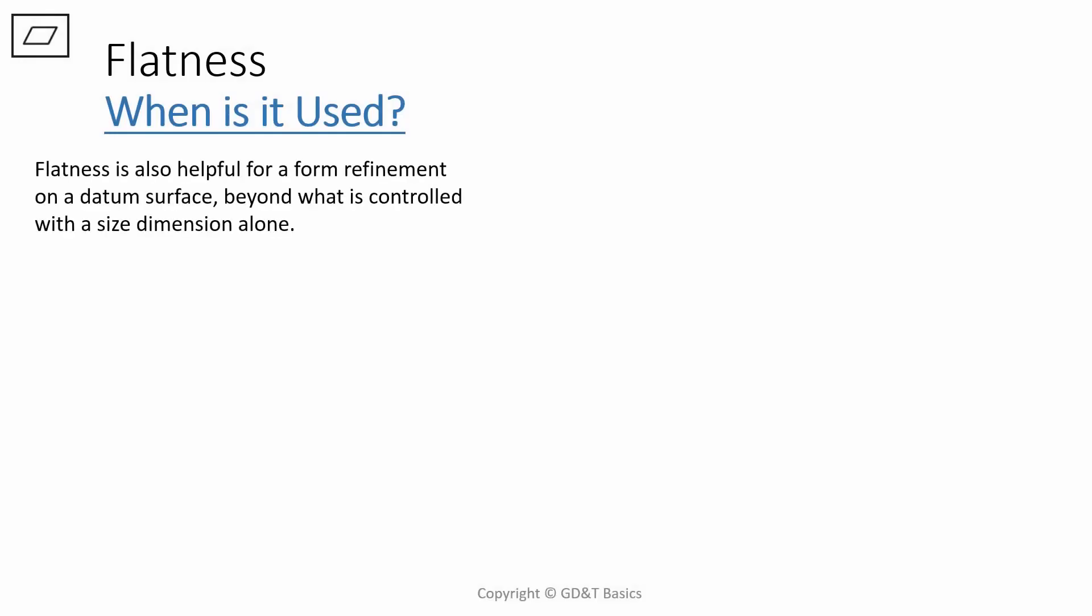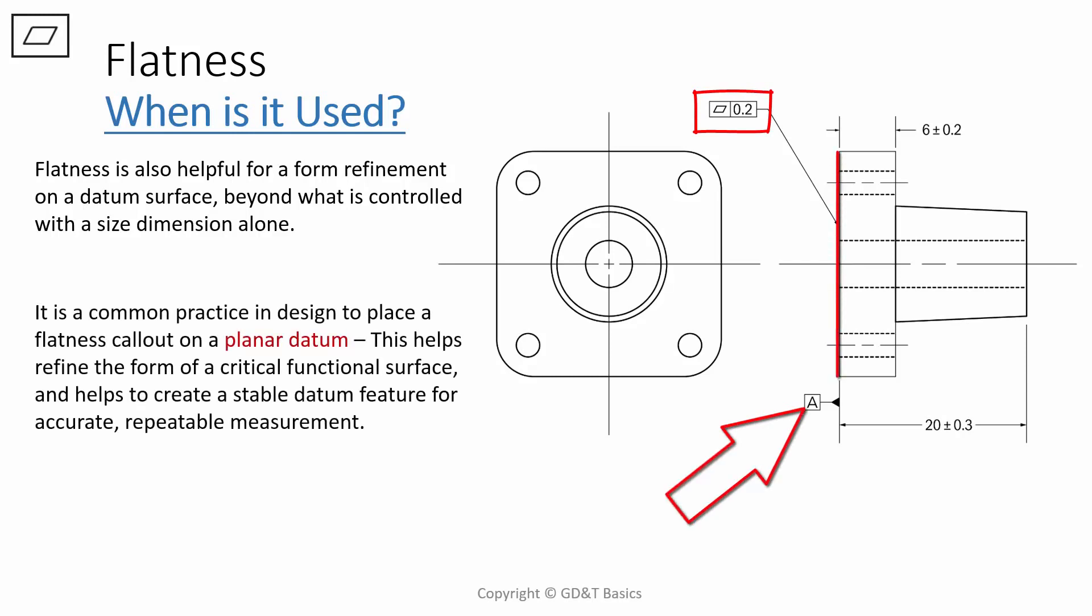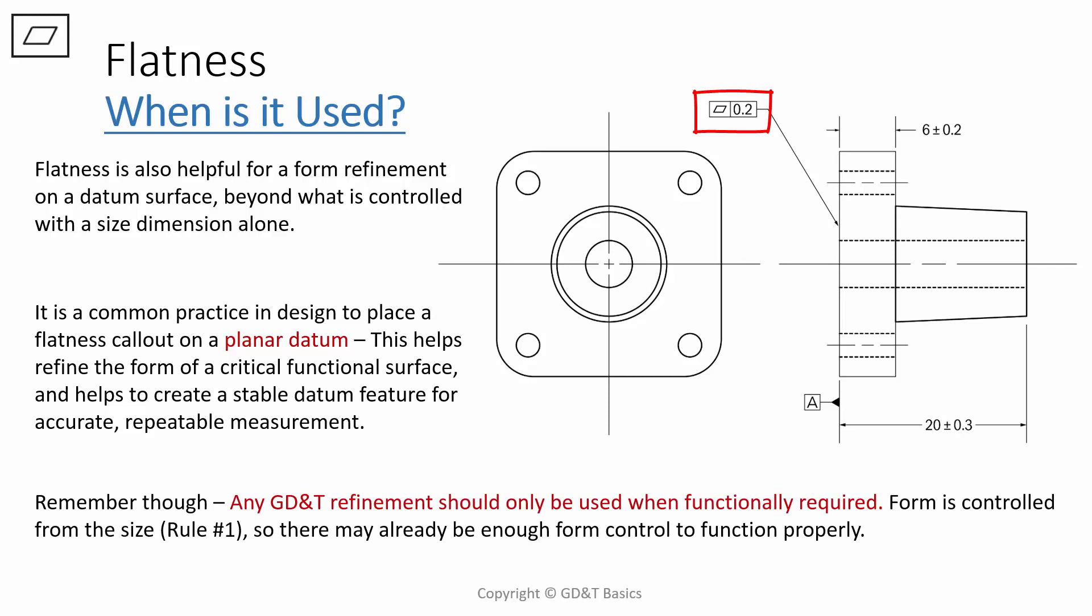One of flatness's most important uses is as a form refinement on a datum surface, beyond what is normally controlled with the size dimension alone through rule number one. You can see flatness applied to datum A right here. It is a very common practice in design to place a flatness callout on a planar datum. This way you refine the form of a critical mating surface or functional surface. It will also help you create a stable datum feature for accurate, repeatable measurement on any of the other features that you have. Remember though, any GD&T refinement should only be used when functionally required. Form is controlled automatically through rule number one, so you may already have enough form control to function properly.